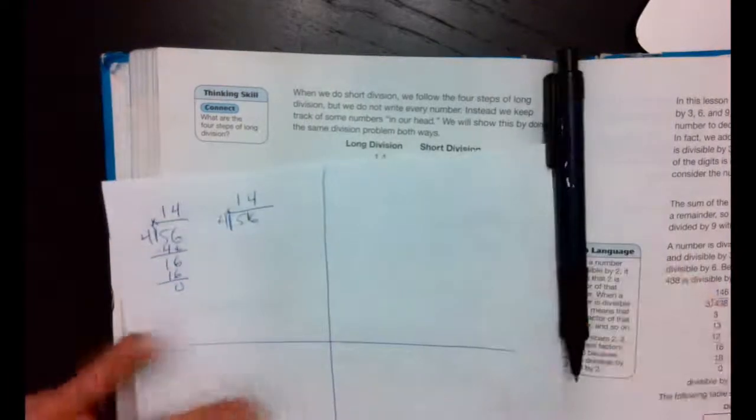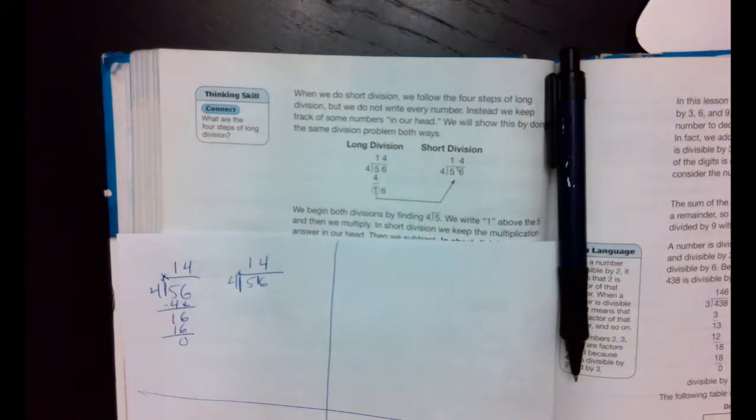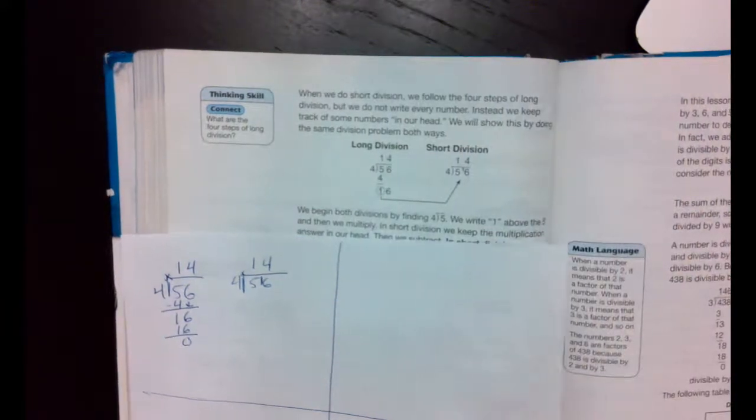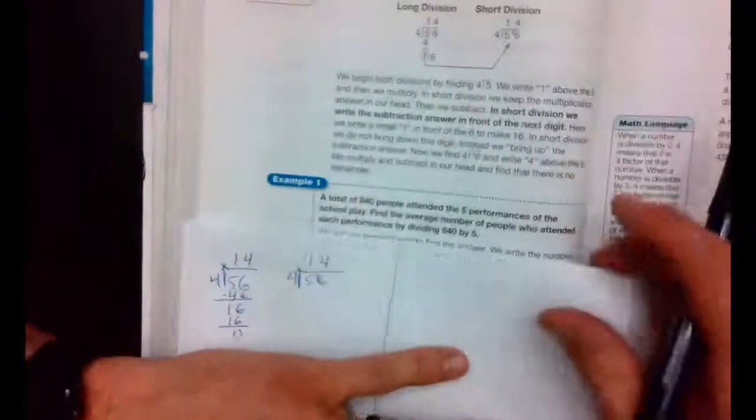Because 4 times 4 is 16. You subtract in your head. So one of those things, you do in the head a couple steps, and one of those things, you have to show all your work. You begin both division problems. 4 times 5. We write through 1. Oh, they're just explaining on their work. Let's try example number 1.